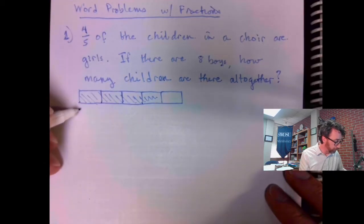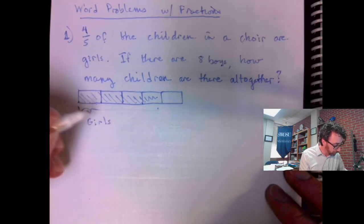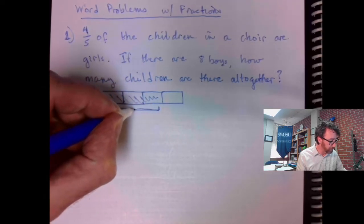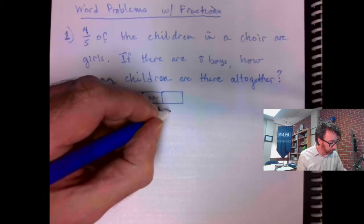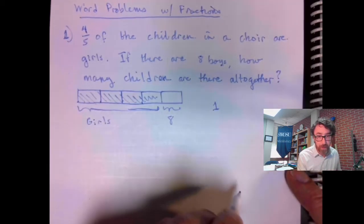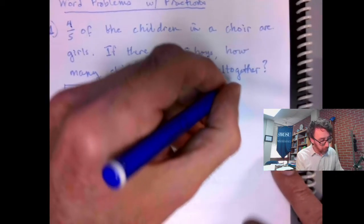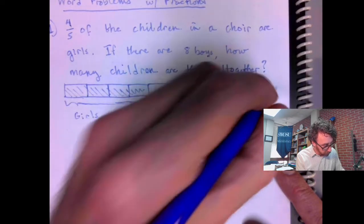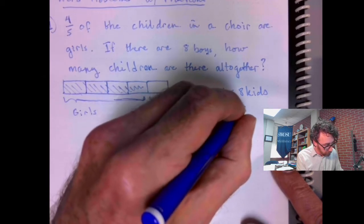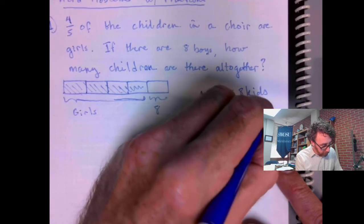Four-fifths of the choir are girls. I'm shading four of the five pieces to represent four-fifths of the choir, and the rest are boys. They tell me there are eight boys, so one unit in my bar diagram equals eight kids. Five units equals five times eight.